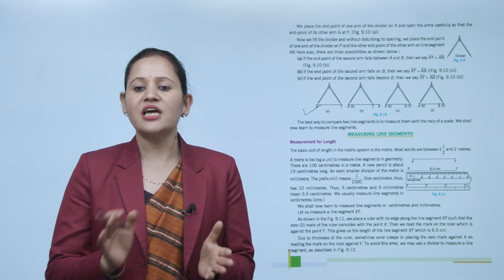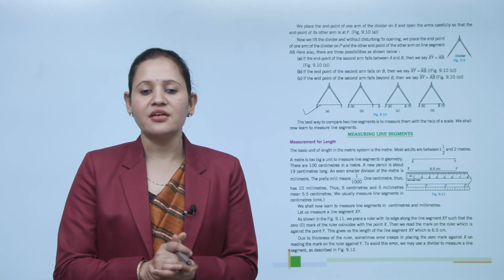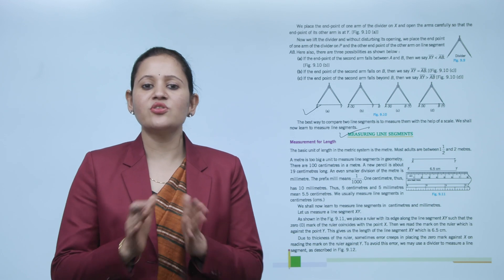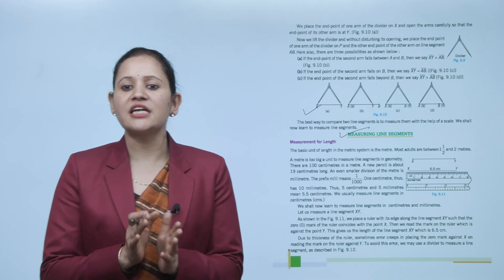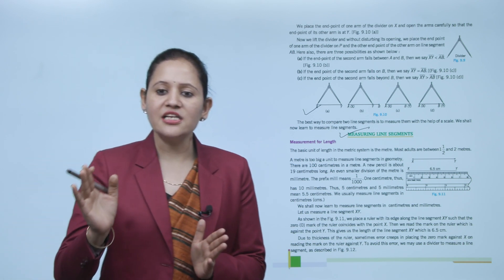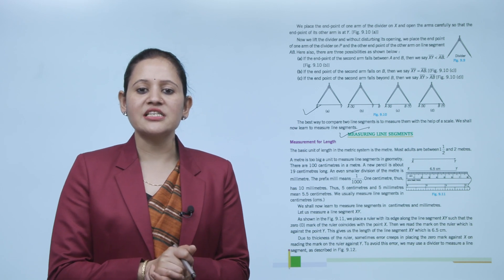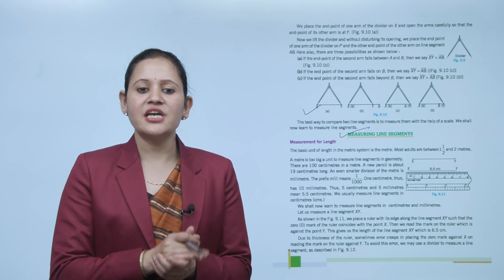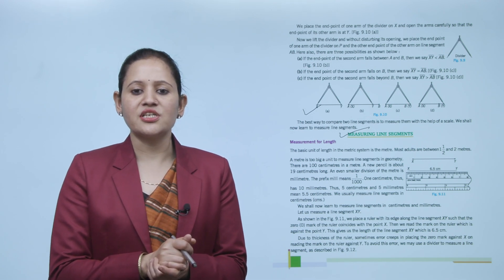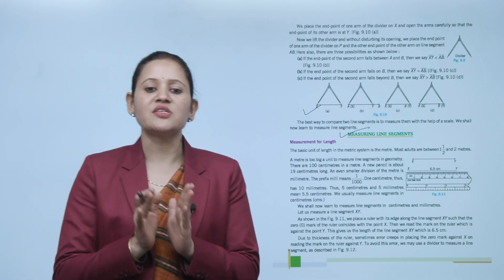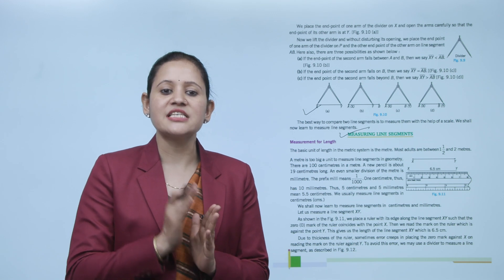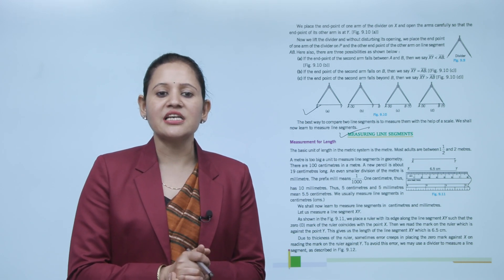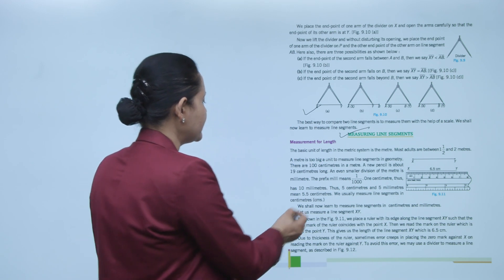Next is measuring line segments. The basic unit of length in the metric system is the meter. There are 100 centimeters in a meter; a new pencil is about 19 centimeters long. An even smaller division is the millimeter — the prefix 'milli' means one-thousandth. One centimeter has 10 millimeters. So 5 centimeters and 5 millimeters equals 5.5 centimeters. We usually measure line segments in centimeters (cm).